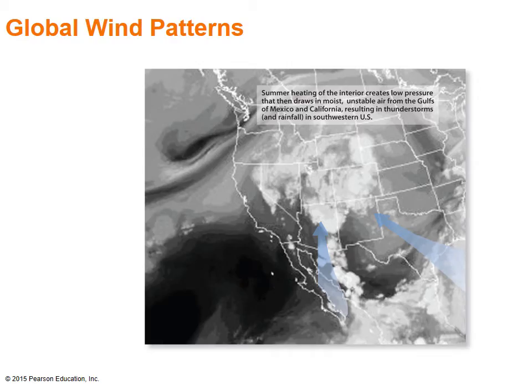High and low pressure systems also produce global wind patterns at local, regional, and global scales. Winds generally flow away from high pressure cells but flow towards low pressure cells. This explains why India receives monsoons in June as heavy moisture air masses flow northward from high pressure cells over the Indian Ocean to low pressure cells in North India and Tibet. This satellite image shows the summer monsoon in the U.S. Southwest: as the Southwest warms in June and July, this heating creates thermal lows that draw in moist air from the Gulf of Mexico and California, resulting in cloudiness, thunderstorms, and much-needed rainfall.